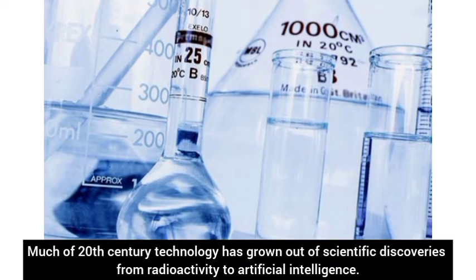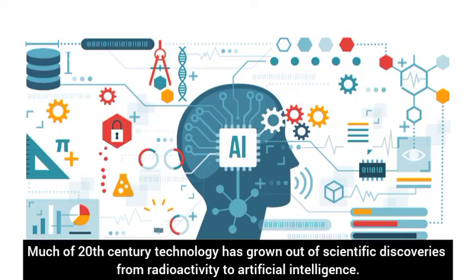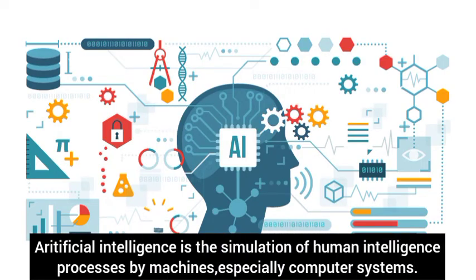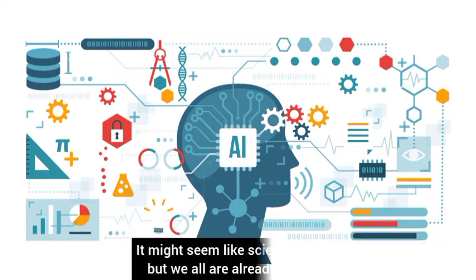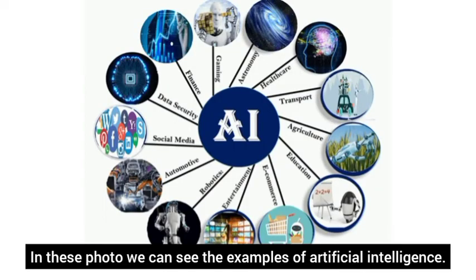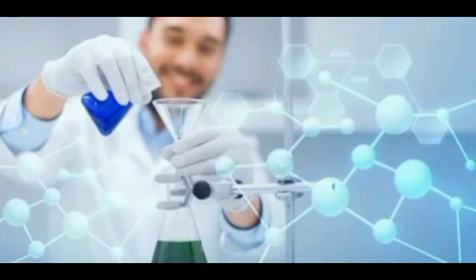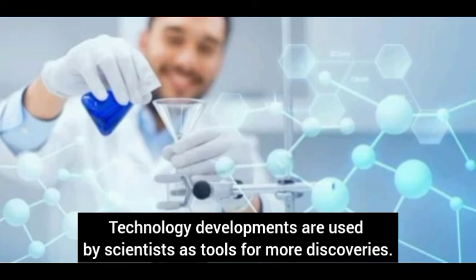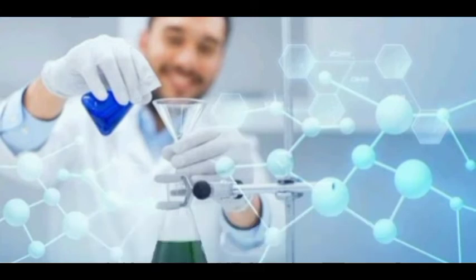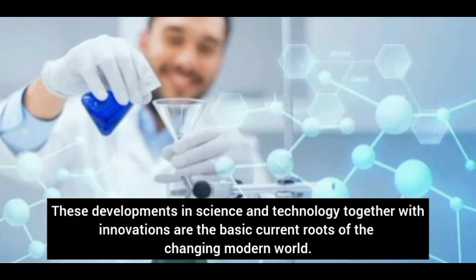Majority century technology has grown out of scientific discovery from radioactivity to artificial intelligence. Artificial intelligence is the stimulation of human intelligence, processes by machines, especially computer systems. It might seem like science fiction, but we all are already using it. In this photo, you can see the SMS of artificial intelligence. Technology developments are used by scientists as tool for more discovery. These developments in science and technology together with innovation are the basis of the changing modern world.